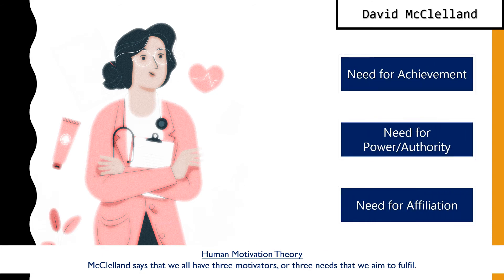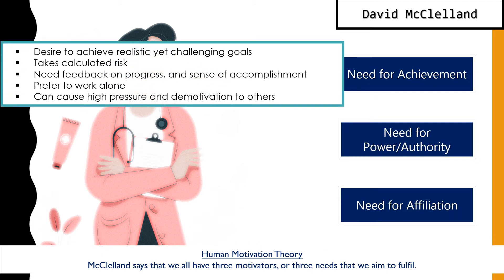For the need for achievement: people in this category desire to achieve realistic yet challenging goals. They take calculated risks to ensure they don't fail and need feedback on their progress and a sense of accomplishment — so they know they're on the right track. Most of the time, a person with a need for achievement prefers to work alone, feeling more confident in themselves rather than depending on others.